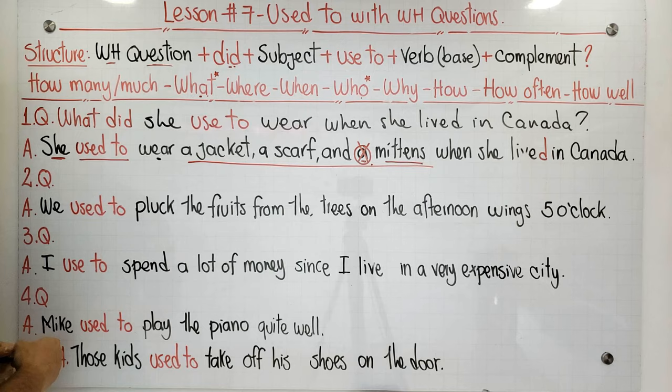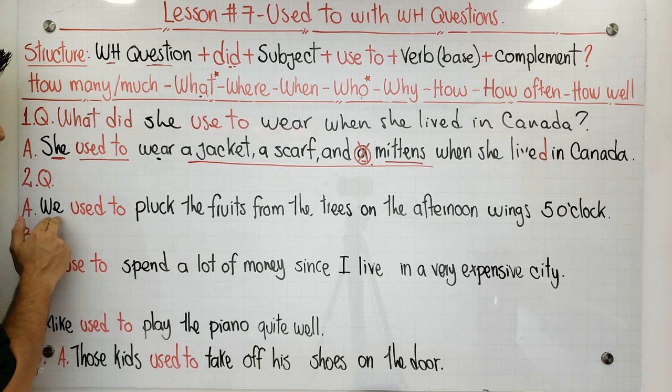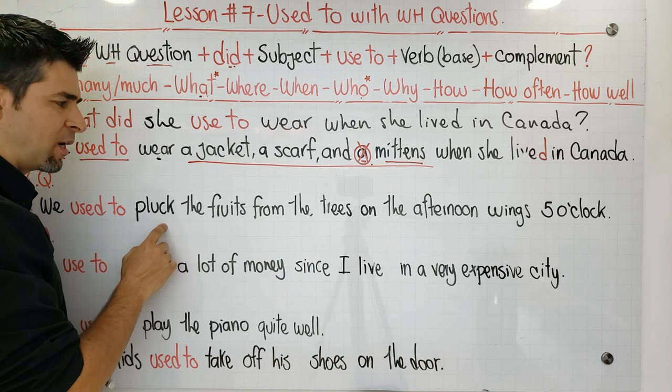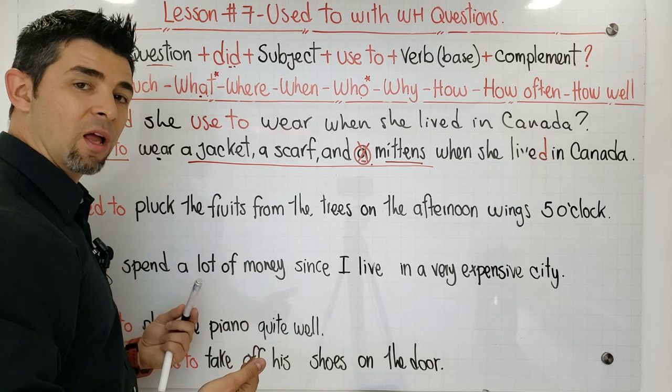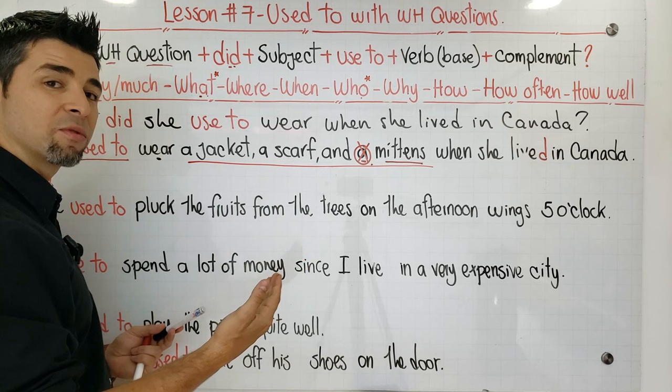For number two, we have the answer and we have to create the question from it. The verb 'pluck' means 'arrancar' — it is a regular verb. The sentence is: We used to pluck the fruits from the trees on the afternoon when it's five o'clock. Can you spot the mistakes? Pause the video and analyze it.